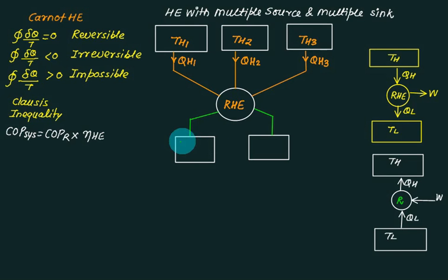I have two sinks, one at TL1, other at TL2. Heat rejected by this one is QL1, and from this one is QL2. You can have any number of heat inputs, any number of heat outputs, but work is only one. This model is called heat engine with multiple source and multiple sink.